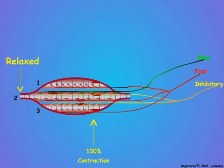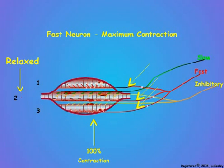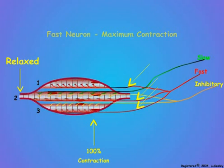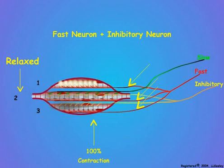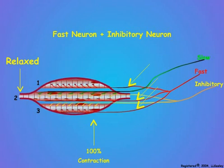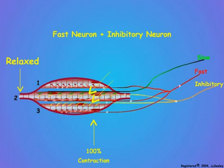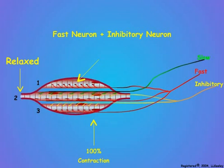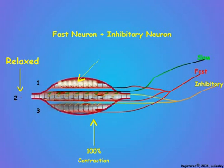Let us now see how inhibitory neurons interact with stimulatory neurons for adding additional controls to insect muscle contraction. In our first example, the fast neuron stimulates all three muscle fibers to provide a maximum contraction. Next, firing the inhibitory neurons hyperpolarizes muscle fibers 2 and 3 at the same time as they are depolarized by the fast neurons. The inhibitory hyperpolarizations block the stimulatory depolarizations to prevent muscle fibers 2 and 3 from responding. Note that only muscle fiber 1 undergoes depolarization and contraction, so that total muscle shortening can only be one-third of the shortening seen when all three muscle fibers are stimulated.